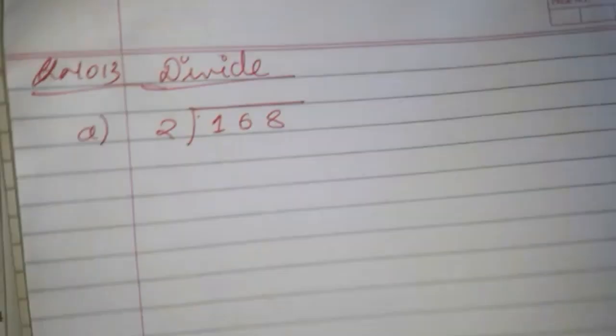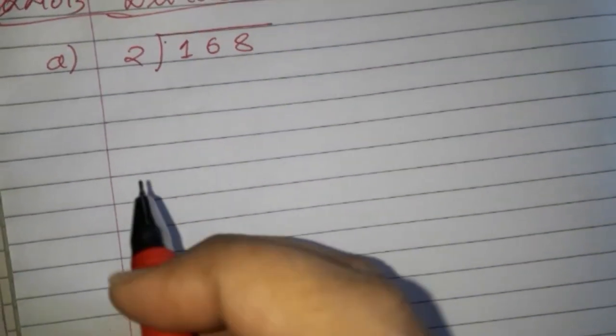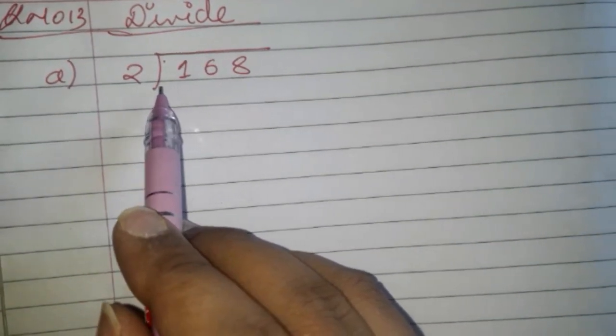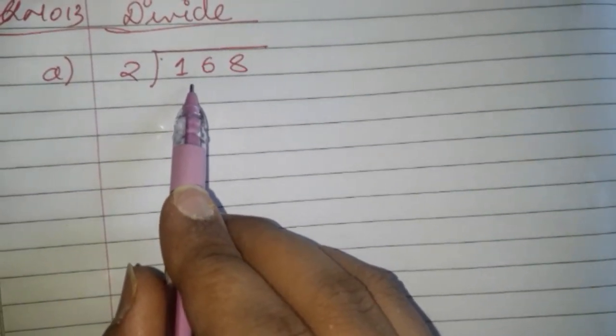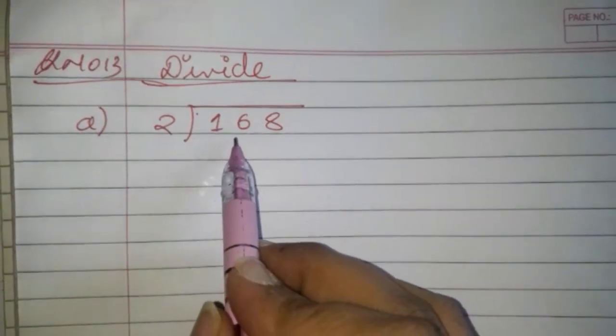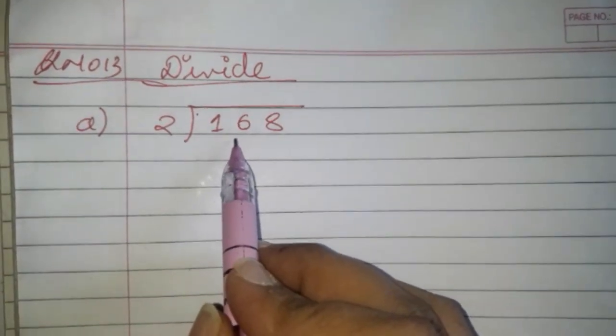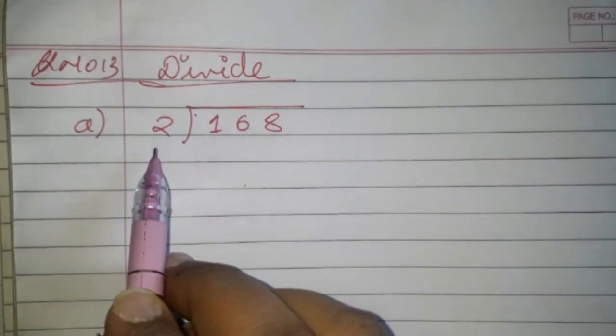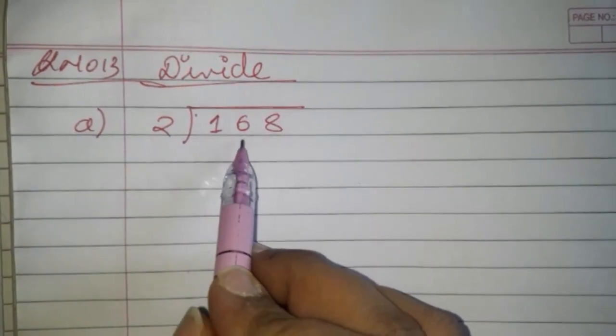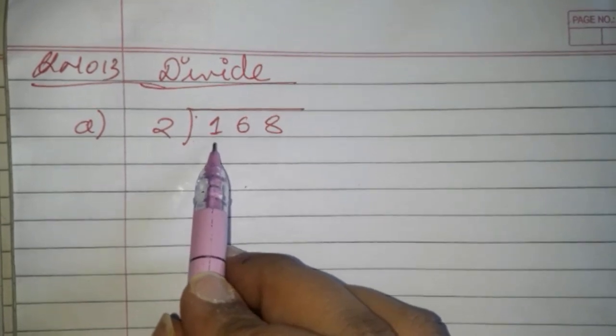168 divided by 2 — we'll start dividing from the leftmost number, which is 1. We cannot divide 1 by 2 because 1 is smaller than 2. So we have to take the next number along with it; we'll take 6 along with it.